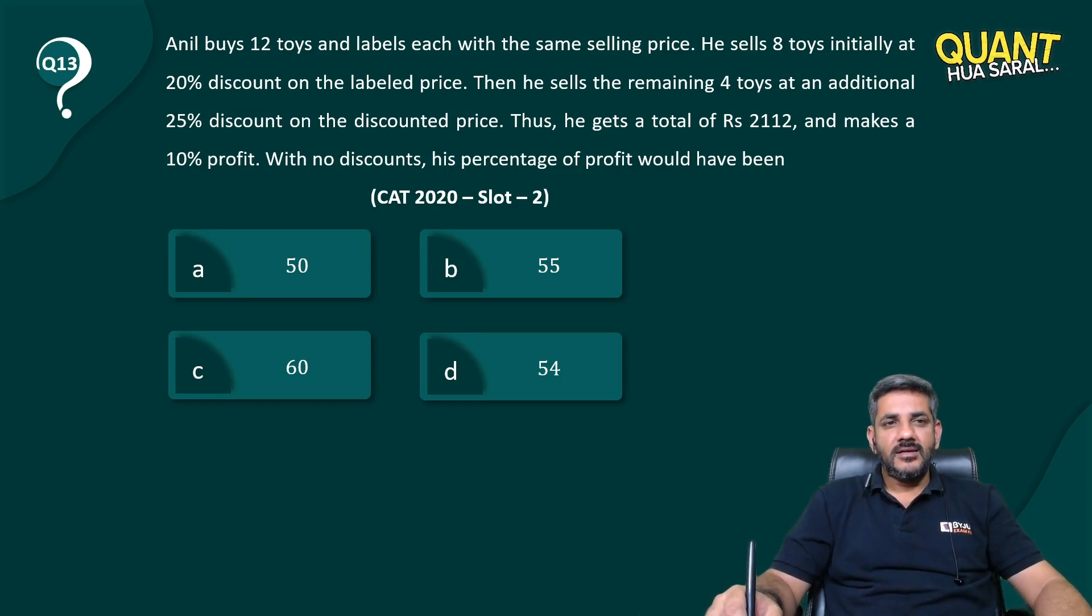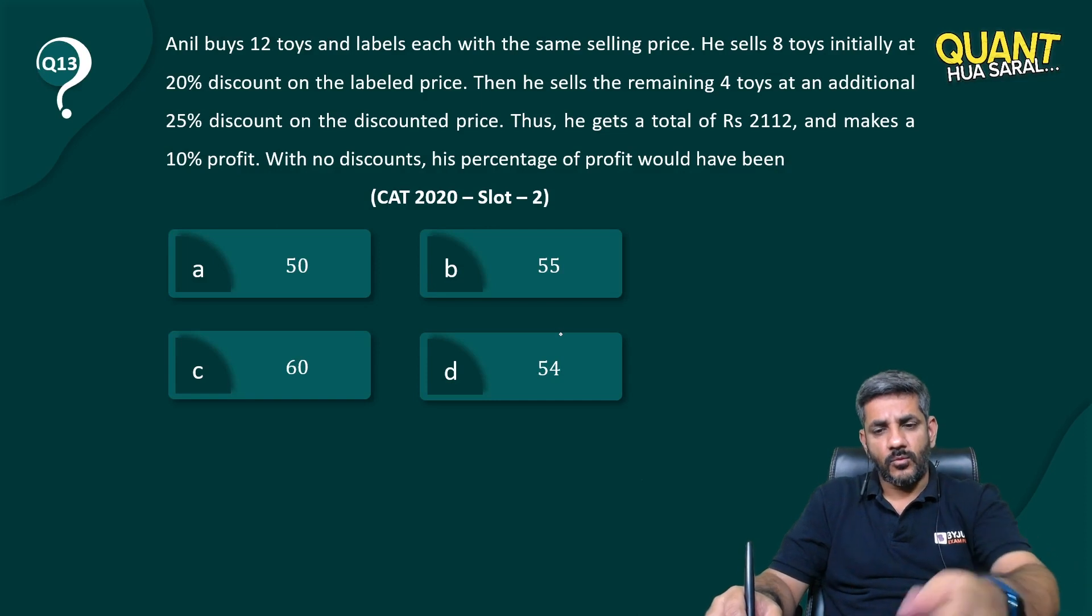selling price. He sells eight toys initially at 20% discount on the labeled price. Then he sells the remaining four toys at an additional 25% discount on the discounted price. Thus, he gets a total of Rs. 2112 and makes a 10% profit. With no discounts, his percentage profit would have been what?